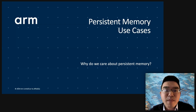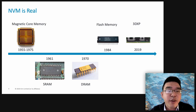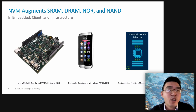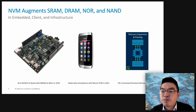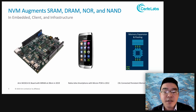Persistent memory use cases — why do we care about persistent memory at ARM? Non-volatile memory is real. It has been here for a while now. Non-volatile memory augments the memory hierarchy in embedded, client, and infrastructure systems. Within ARM, we've invested in non-volatile memory technologies internally, such as MRAM and CE-RAM over the past couple of years. More recently, we had a spin-out from ARM Research named CERF Labs, which had been focusing on CE-RAM.